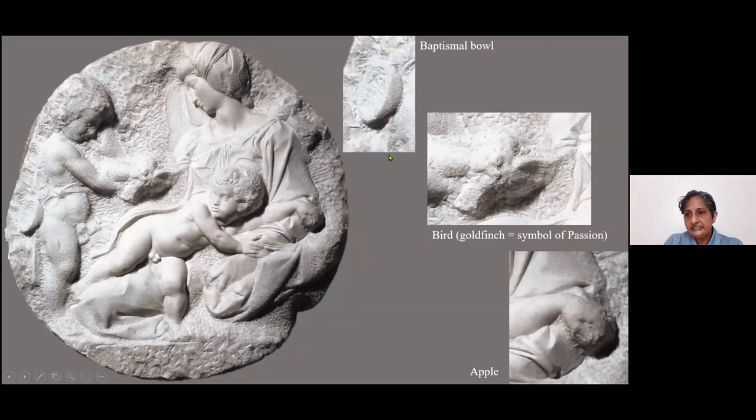Here are the details — so you can see the bowl, a better image of the bird with the wing and the body, and the apple held by the Christ child.